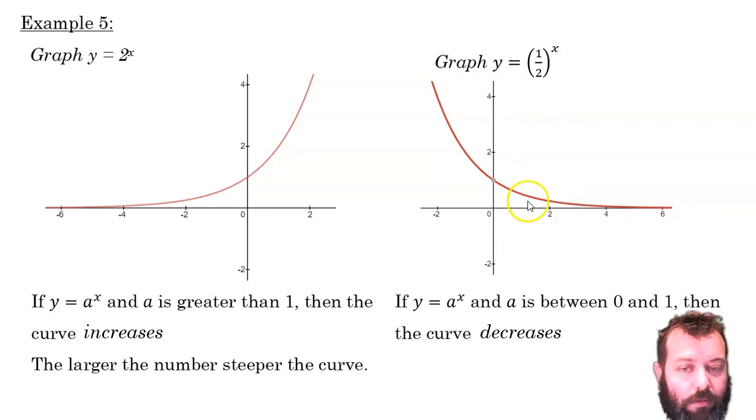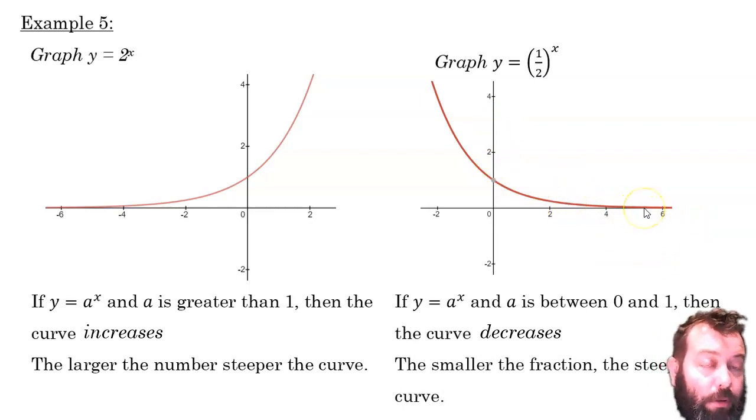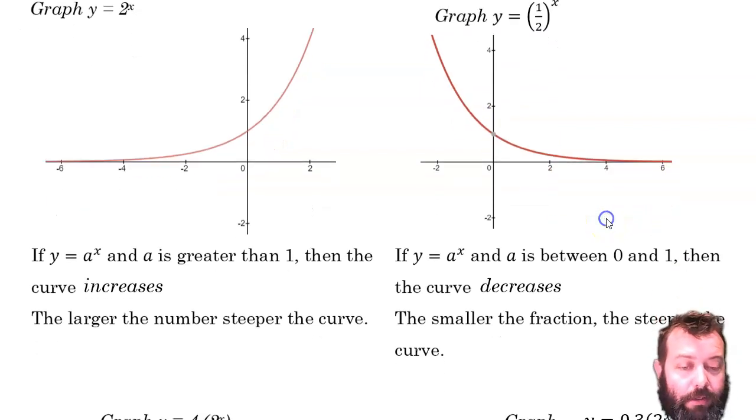It continues to halve every step along to the right. So it's always decreasing. However, it's decreasing as it approaches 0. So it's decreasing at a decreasing rate.